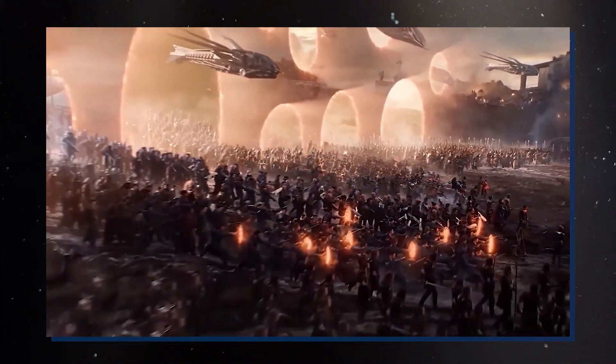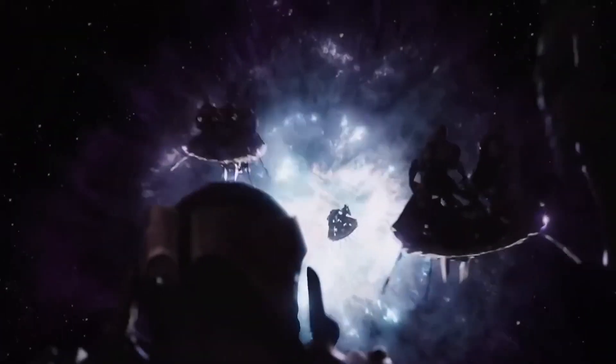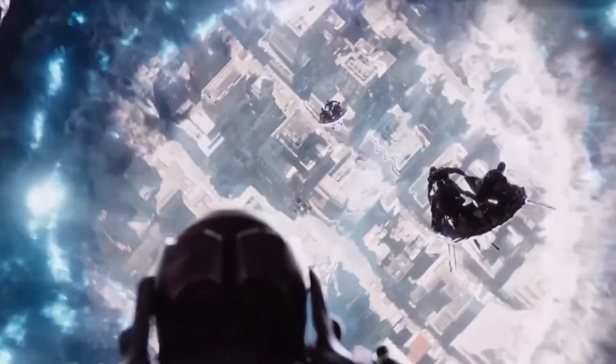This interaction creates a buffer, known as the magnetosphere, which deflects the majority of the solar wind away, preventing it from directly reaching our planet's atmosphere.